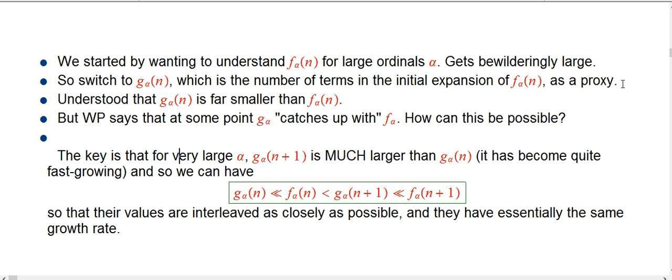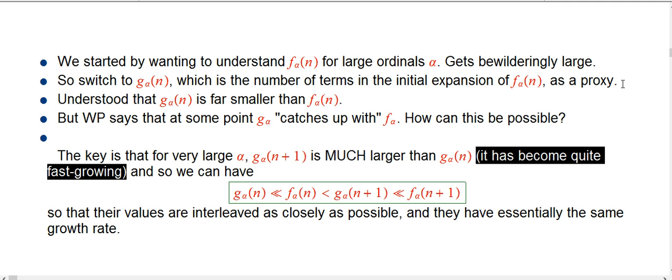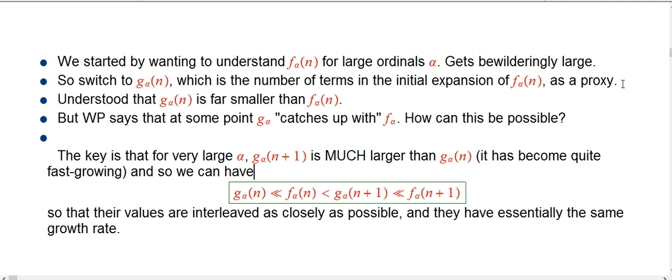Here's the key. Here's what that catches up with statement actually means. It's that when α is very large, when the ordinal is very, very large, even the slow-growing function, even g_α, is fast, fast-growing. And in particular, if you put in n+1 instead of n, you just ratchet up the input number, the numerical natural number input, you ratchet that up by 1, then it will be much bigger than g_α(n). So g_α(n) itself has become quite a fast-growing function in itself.